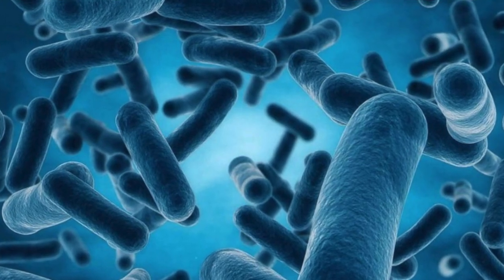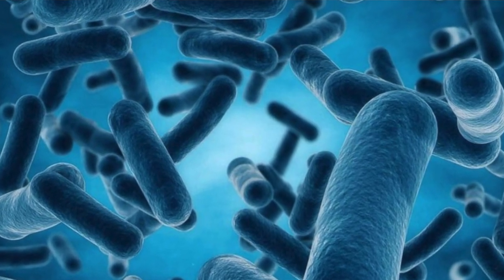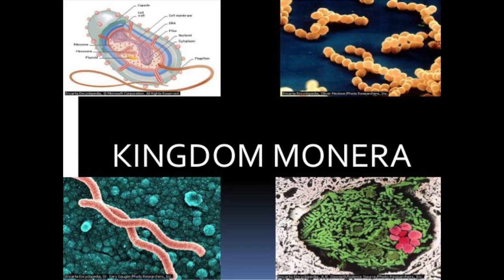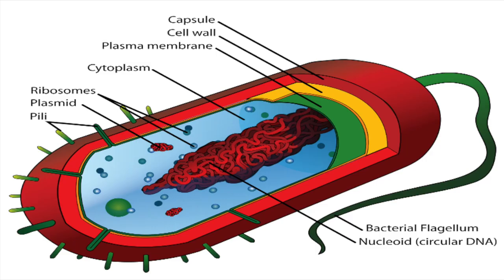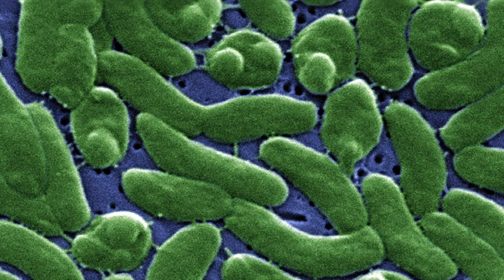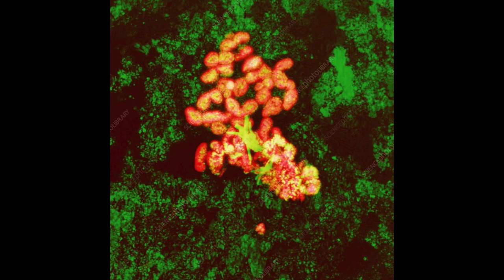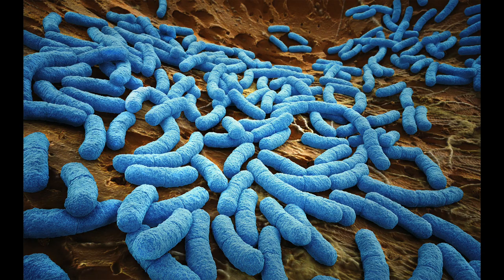You know that bacteria are tiny one-celled organisms. Bacteria make up the Monera kingdom. They're the smallest, simplest living things. You could find them almost anywhere on Earth — in the ocean, in the snow at the top of mountains, on bare rocks, and inside your body.